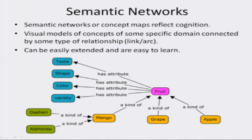A semantic network is a visual model of concepts of some specific domain connected by some type of relationship in the form of links or arcs. They can be easily extended by adding more concepts and relationships, and are also easy to learn. Here is an example of a semantic network or concept map.